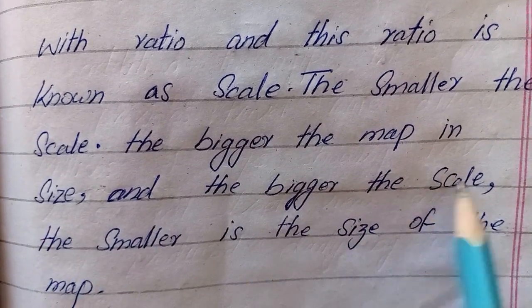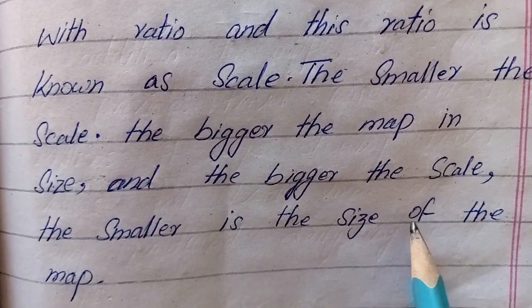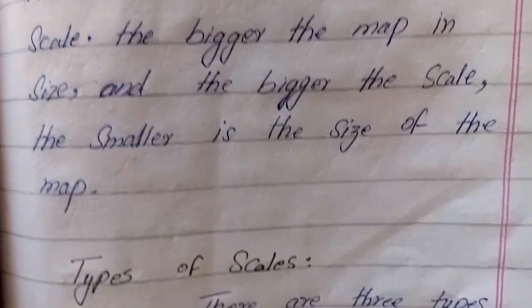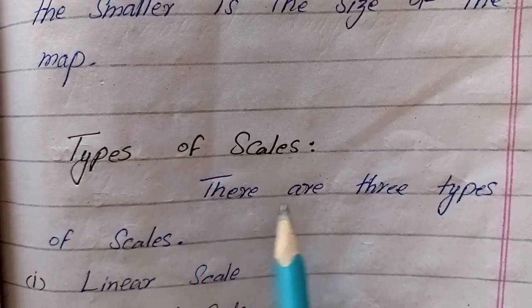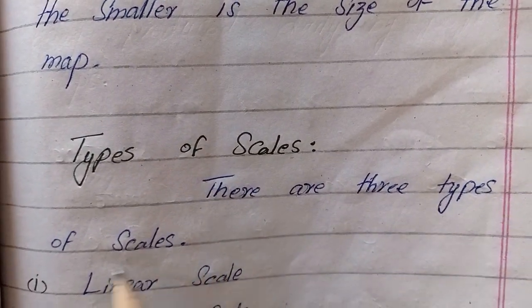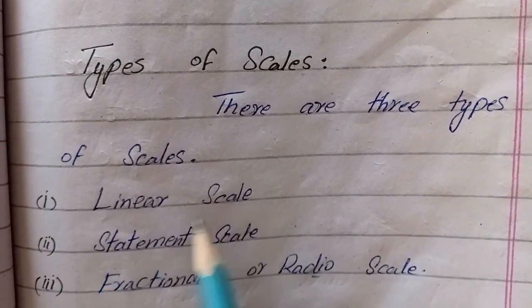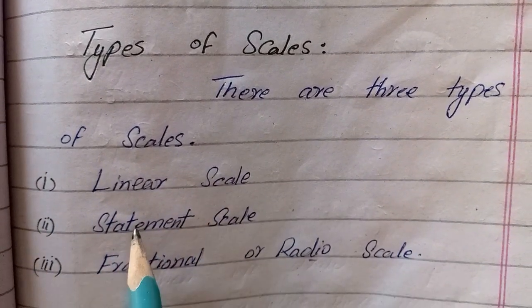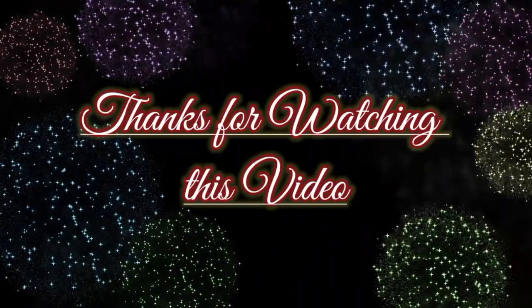The smaller the scale, the bigger the map in size, and the bigger the scale, the smaller the size of the map. Types of scales: there are three types of scales — number one: linear scale, number two: statement scale, and number three: fractional scale.